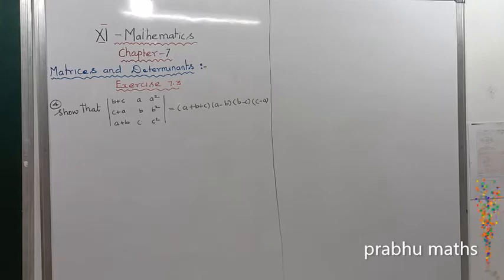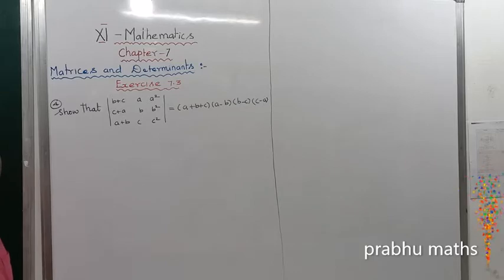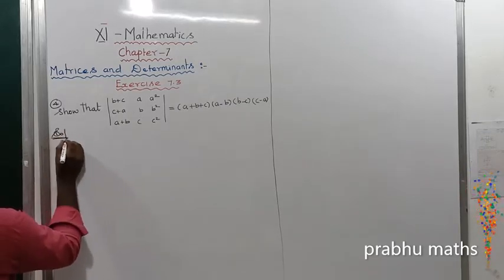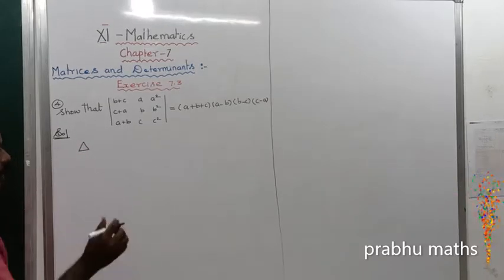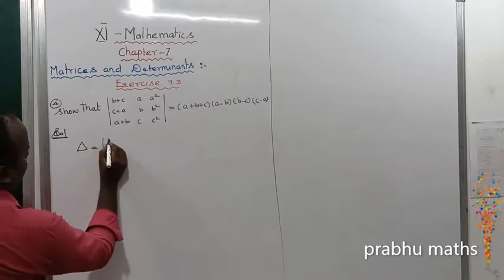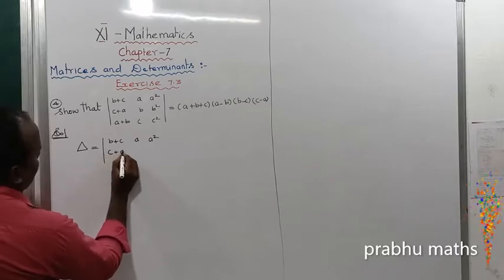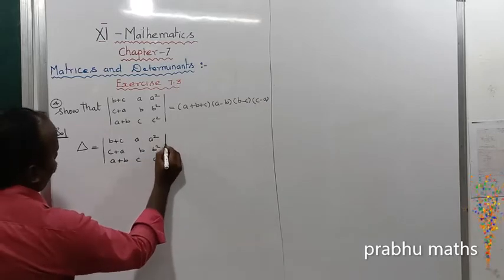Exercise 7.3, fourth sum. Show that the determinant of b+c, a, a² / c+a, b, b² / a+b, c, c² is equal to (a+b+c)(a-b)(b-c)(c-a). Let us consider delta equal to that determinant.